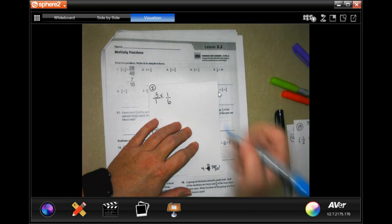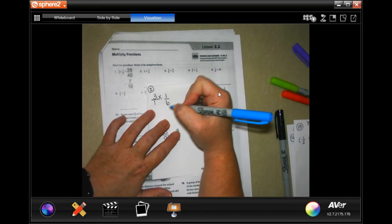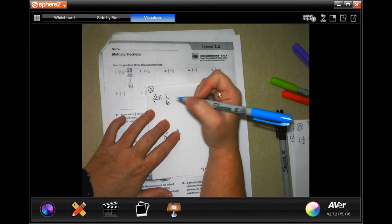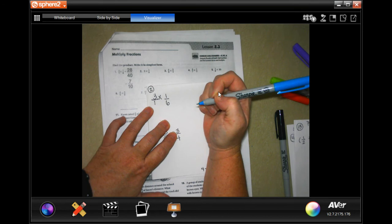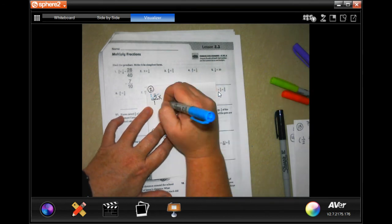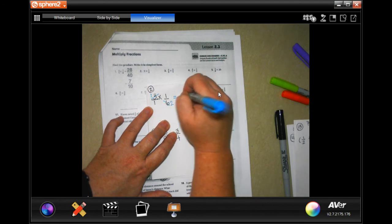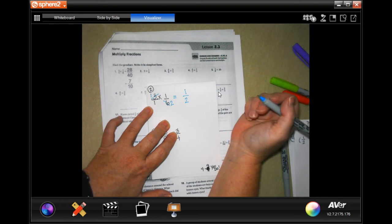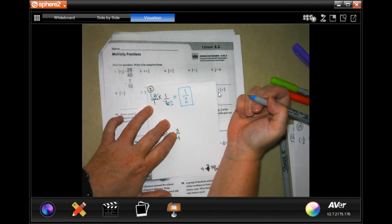Now we can cross-cancel, which means any top with any bottom, if they are divisible by the same thing, you can reduce them. If I were to divide 3 and 6 both by 3, 3 goes into 3 one time, 3 goes into 6 two times, which means when I multiply them across, I get 1/2. That's reduced form. So number 2, your answer is 1/2.